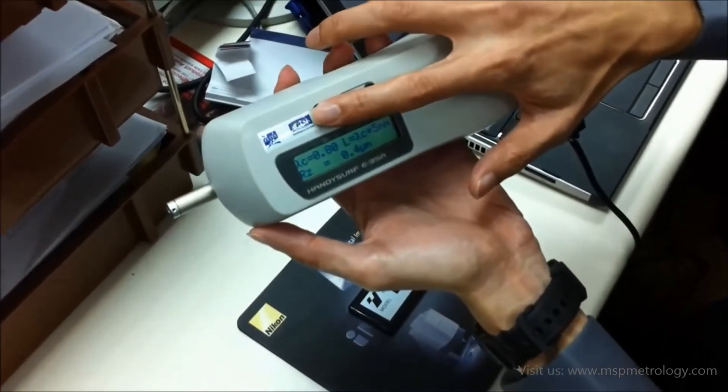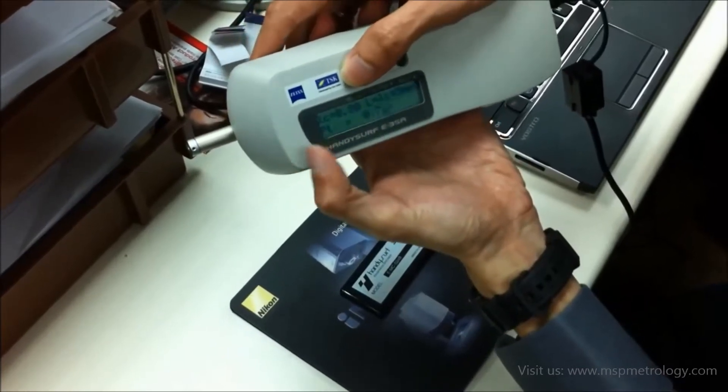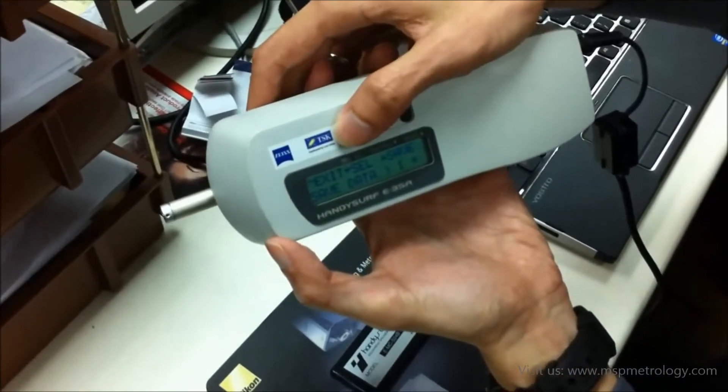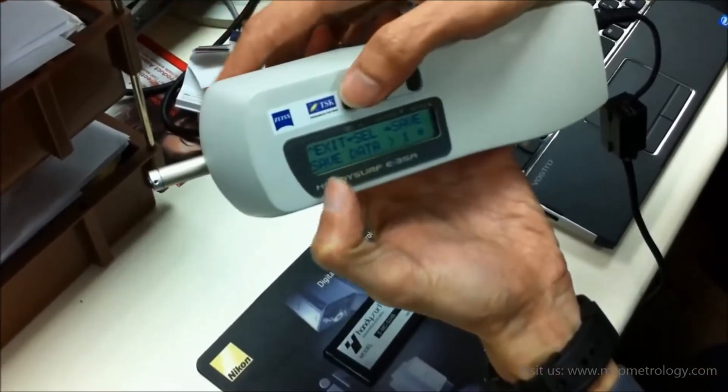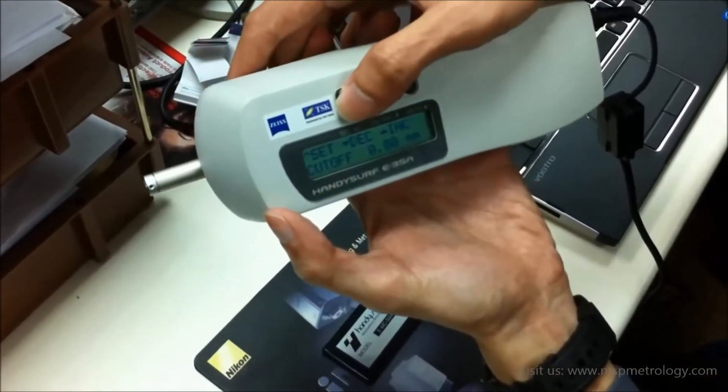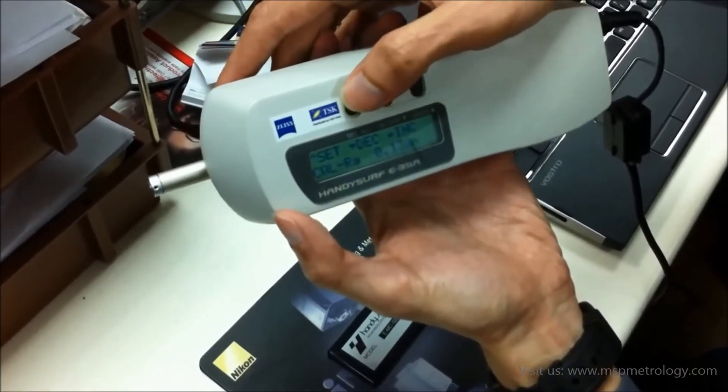You can do various types of settings. If you want to see the parameters, you can scroll through using the first button. You can also save data into the instrument itself, up to 10 data points, and set the cutoff length. You can decrease and increase these settings.